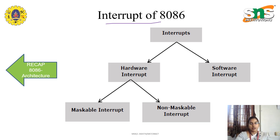Apart from the architecture and the configuration, we need to know the most important topic for the 8086 lifecycle: interrupts. As we know, an interrupt is nothing but a special routine of instructions which is used to perform tasks — additional tasks apart from the main program.